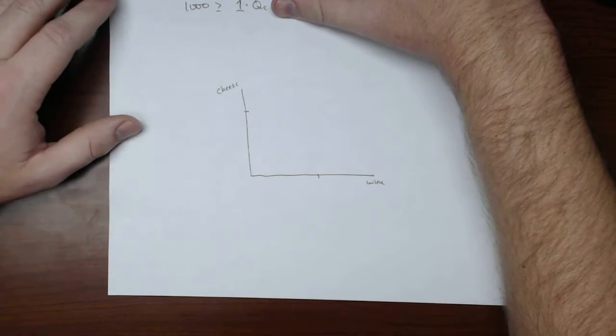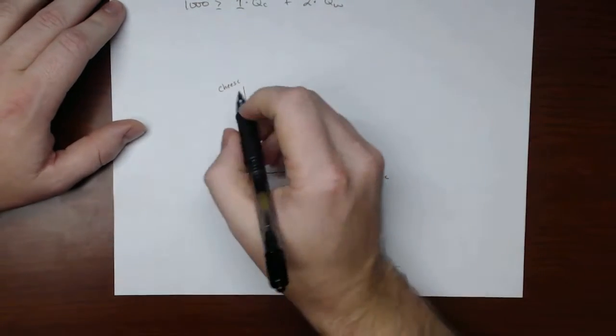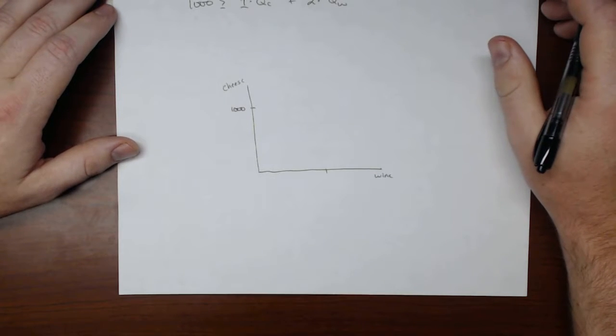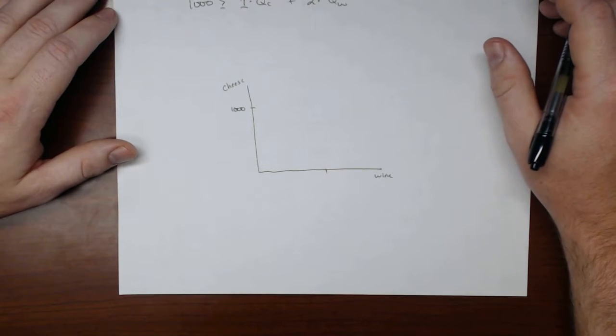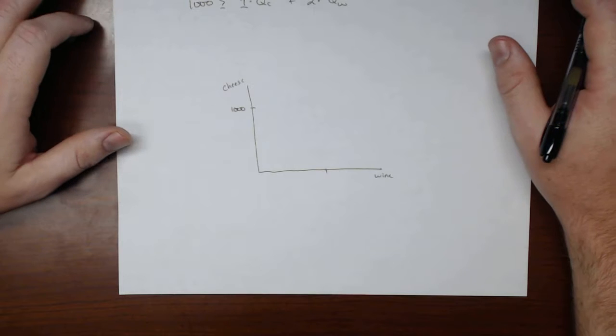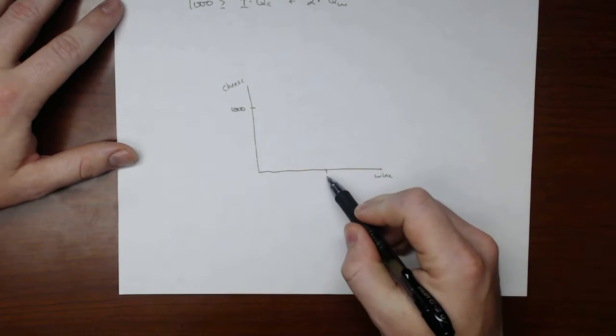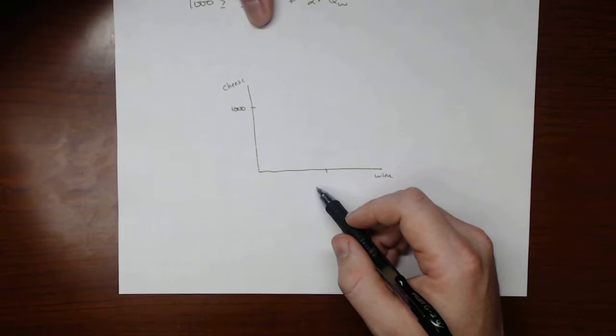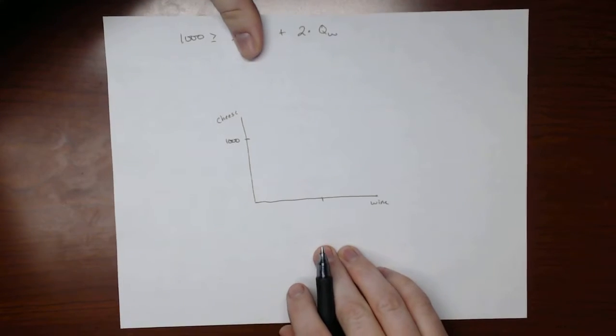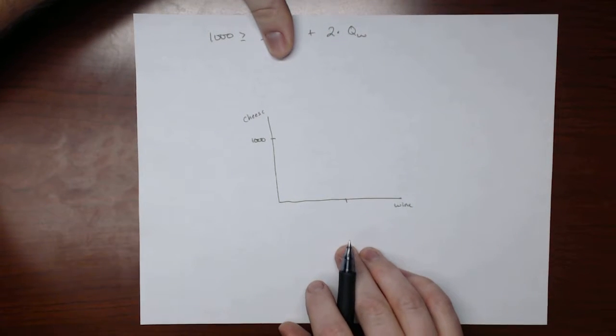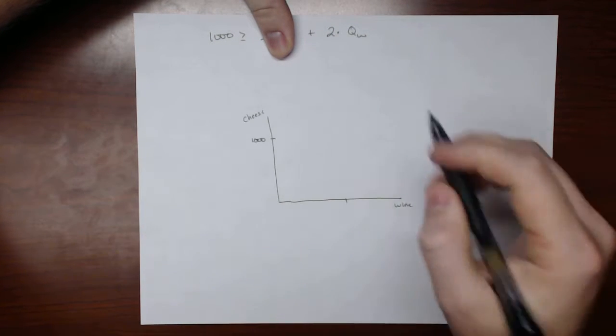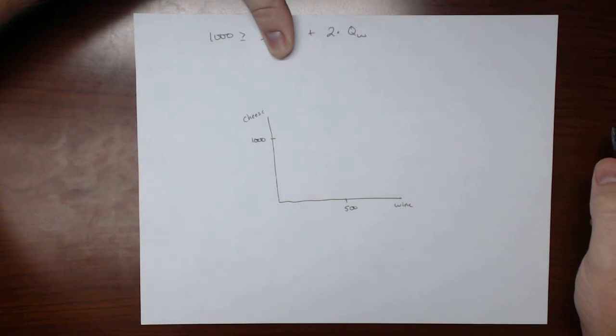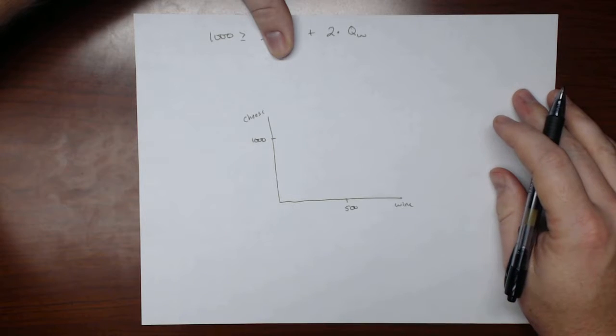And we would find, we just divide both sides by 1, that QC is equal to 1,000, which says that the absolute most amount of cheese that this country can produce is 1,000 pounds. And if we wanted to find out the maximum number of bottles of wine that this country could produce, then we just solve this equation. So if we solve this equation, we just divide by 2, and we find that the absolute greatest number of bottles of wine that this country can produce is 500.